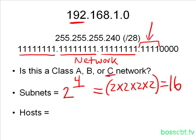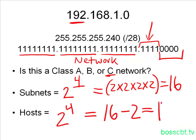If we move on and now look at the hosts, our formula is 2 to the power of the number of host bits. We used 4 host bits to make this subnet mask, so we only have 4 left. We plug that into our formula — it's the same as the subnet calculation. 2 to the power of 4 equals 16, minus 2 equals 14. Don't forget the minus 2: we're subtracting the network number and the broadcast number in order to find the number of valid hosts. So we've determined that by using this subnet mask we can create 16 different subnets, and each subnet is going to have 14 valid hosts.